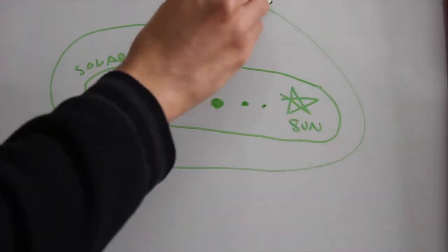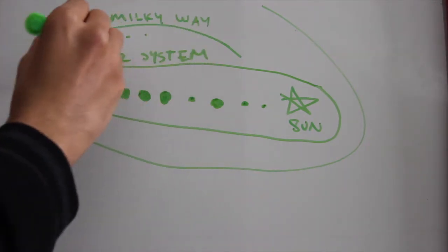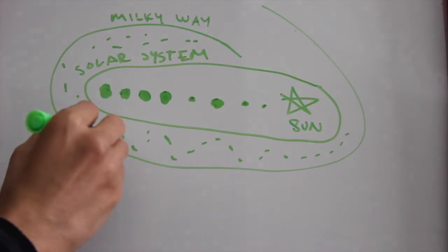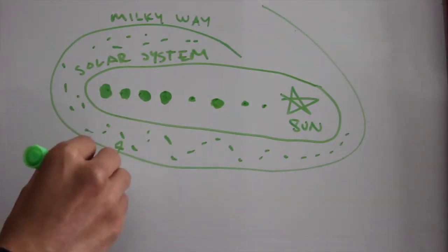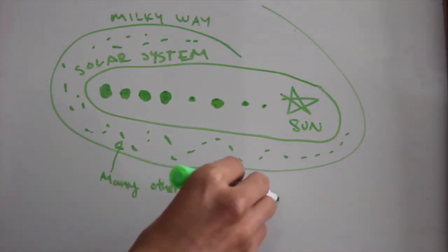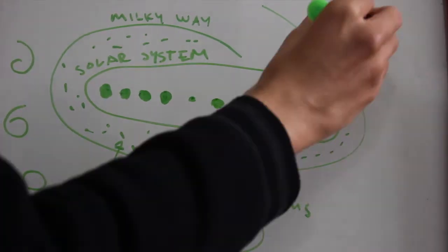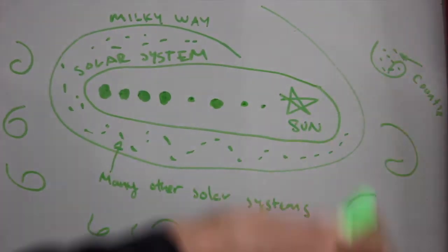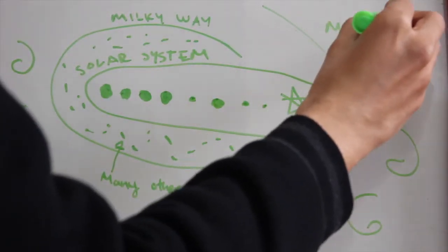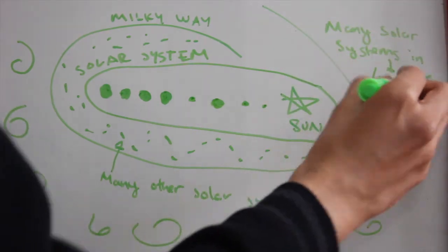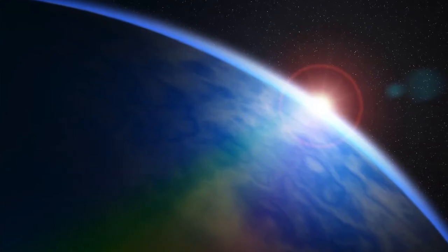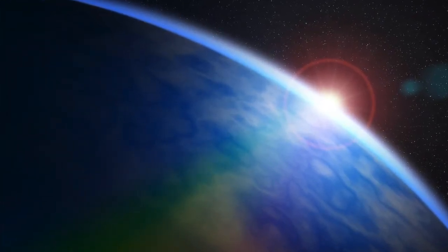Our solar system is a part of a galaxy called the Milky Way, which is home to countless other systems of stars and planets like our solar system. Our solar system is just one small star-planet system among millions. Those planets not in our solar system are called exoplanets. But to make things more complicated, our Milky Way galaxy is in a universe with at least a hundred billion other galaxies, and those galaxies have millions of star-exoplanet systems in them.